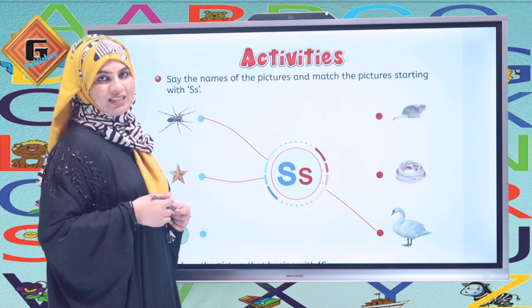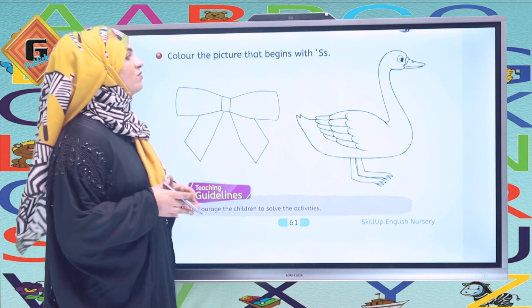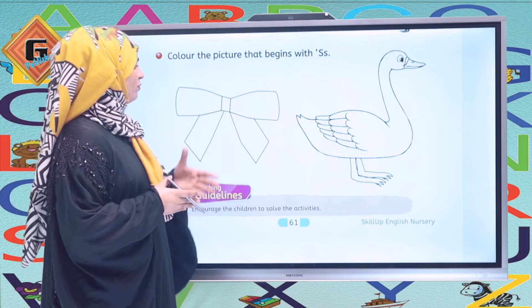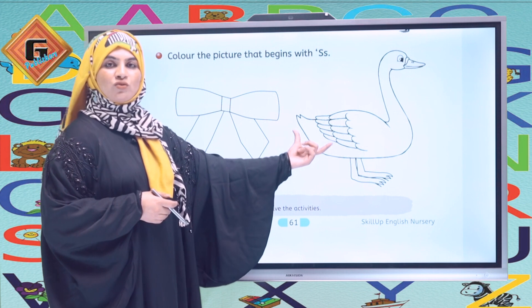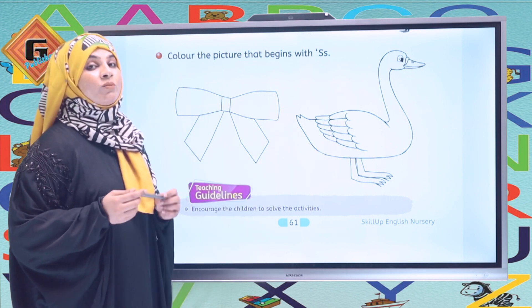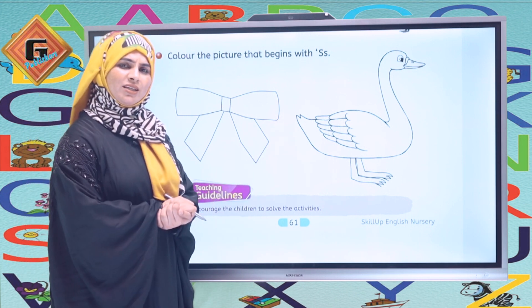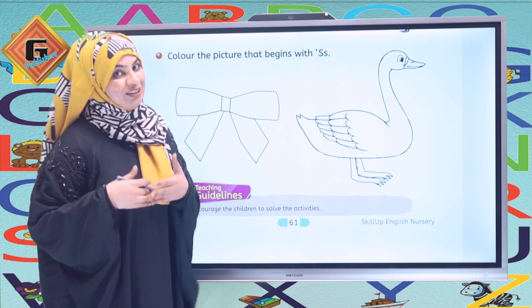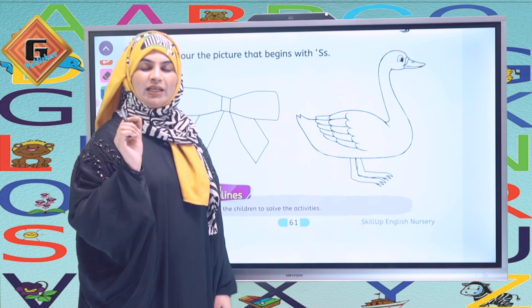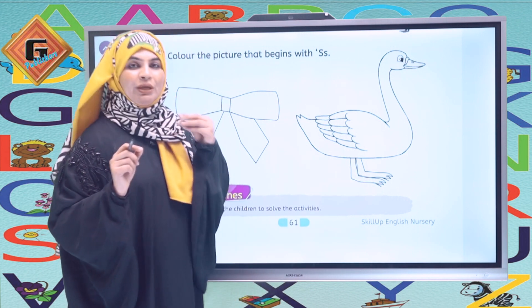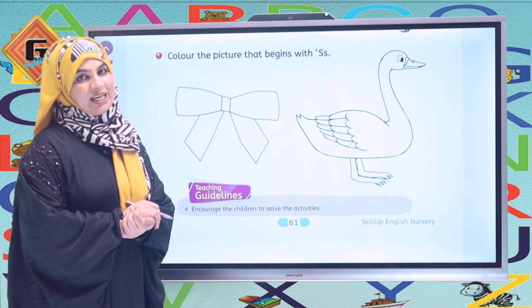Now the next activity: color the picture that begins with letter S. We have two different pictures — a ribbon and a swan. We are going to color the swan. But swan is already white, so what can you do? You can shade it a little bit with a lead pencil on the body and the beak — the swan is white, so just shade it lightly.